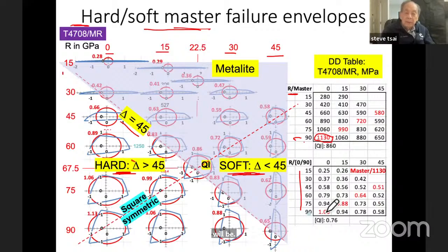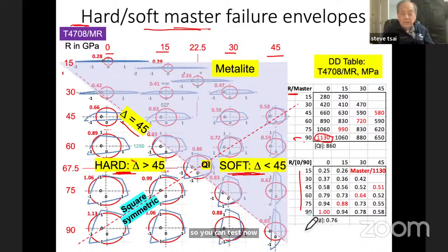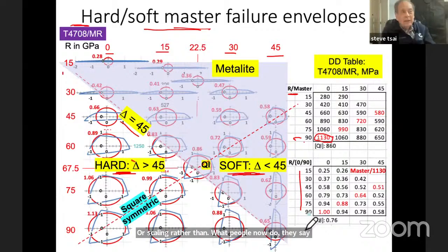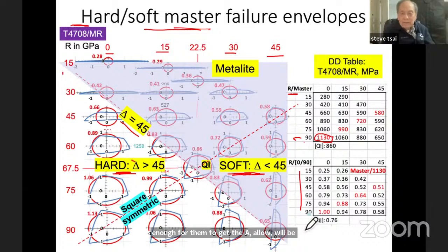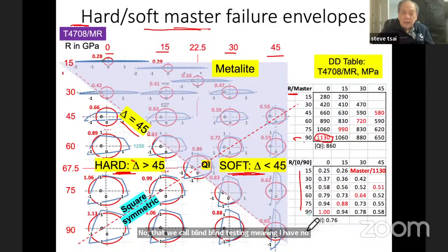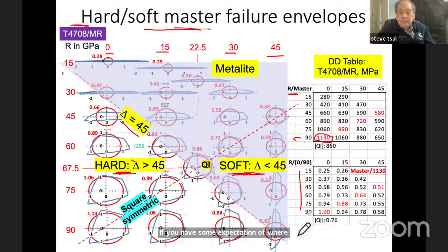This is much more orderly. You can test for confirmation or scaling rather than what people currently do — having no idea what the strength is for any given material or laminate, then testing enough specimens to get A-allowable, B-allowable. We call that blind testing — having no expectation of what the value is. If you have some expectation of what it should be, it's so much easier to measure. If it turns out as expected, you don't have to test thousands of specimens — maybe a few dozen will be enough.